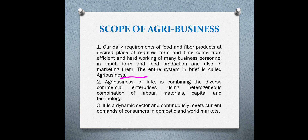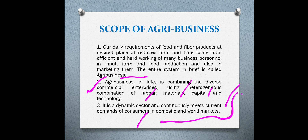In agribusiness we can combine diverse activities like commercial enterprises — a heterogeneous combination of labor, materials, capital, and technology. We can use new technologies and new materials for production, and also use capital for taking the right level of production. Agribusiness is a combination of multiple activities and functions directly and indirectly related to agriculture, and it is a dynamic sector continuously running to meet customer requirements at domestic and international levels.